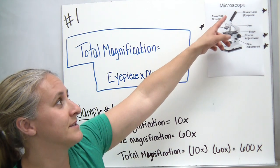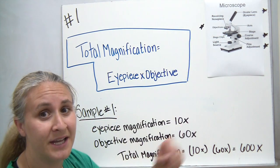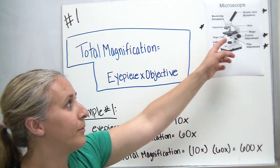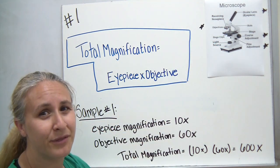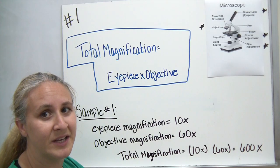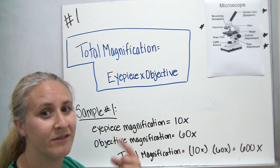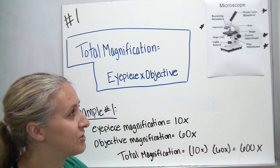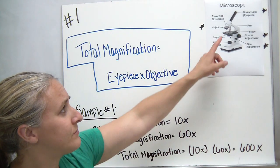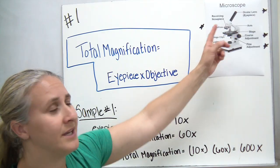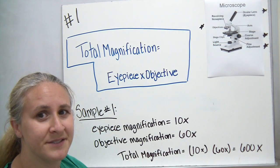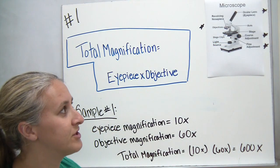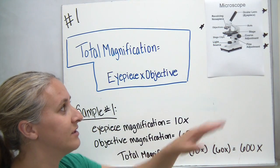Typically our eyepieces magnify ten times, and most of our microscopes have three objective lenses with varied magnifications on them. You would rotate the objective lenses around in order to change the magnification.